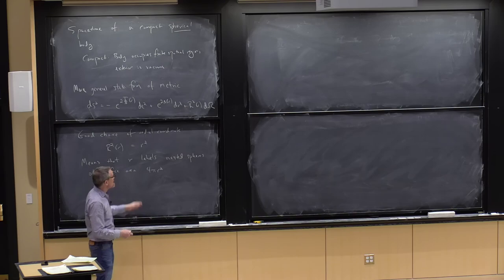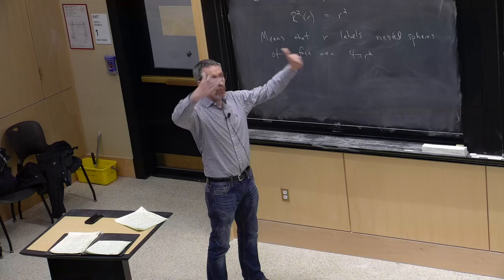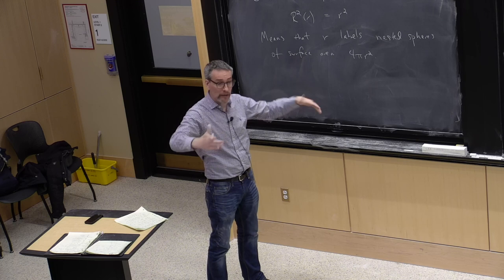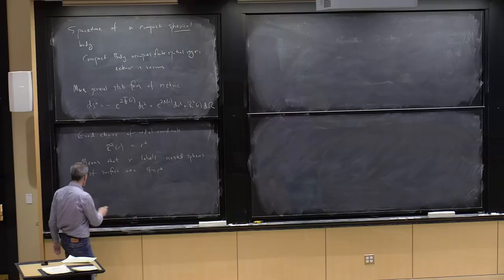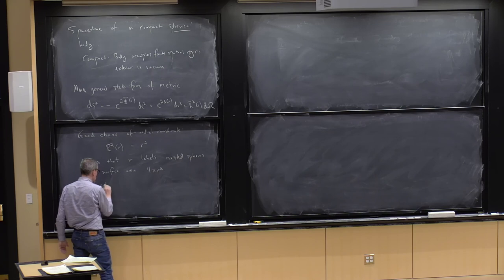Bear in mind, that does not mean, let's say I've got one sphere of radius 4πr₁^2, and then outside of it, a sphere of radius 4πr₂^2, that does not mean that the distance, the proper distance between those two spheres, is r₂ minus r₁.